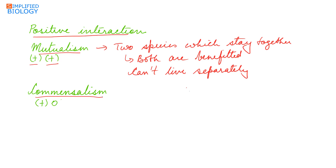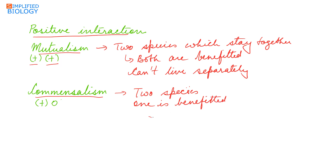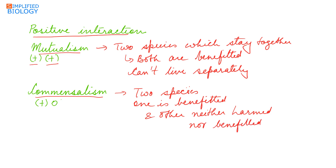Commensalism is an interaction between two species where one is benefited and the other is neither harmed nor benefited. So it is a positive interaction for one and neutral for the other.